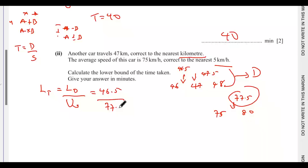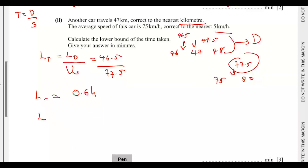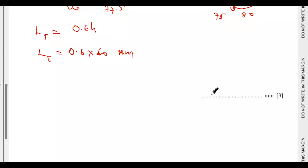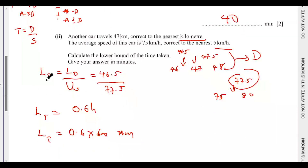The upper bound of speed is 77.5. So the lower bound of time equals 46.5 ÷ 77.5 = 0.6 hours. Multiplying by 60 gives 36 minutes. You can convert to minutes before or after working it out — the answer is 36 minutes.